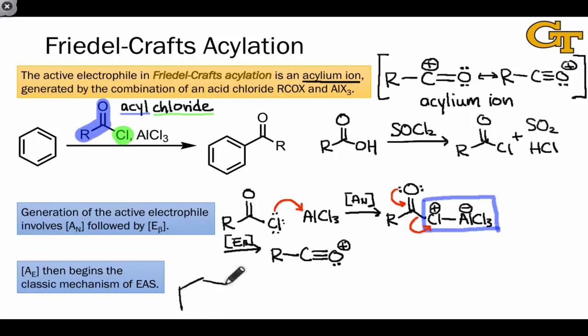From here, the mechanism is classic electrophilic aromatic substitution. The benzene ring coordinates to the electrophilic carbon in the acylium ion in an A sub E or AD E step, depending on which resonance structure of the acylium ion we actually draw.